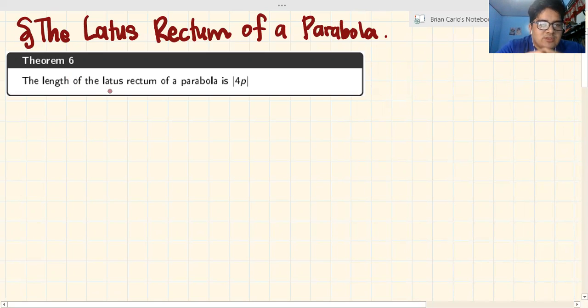Theorem: The length of the latus rectum of a parabola is the absolute value of 4p. So it is a theorem, which means you are required to present a proof. Now, let's get started. How are we supposed to prove this? Let's start off with the word proof.